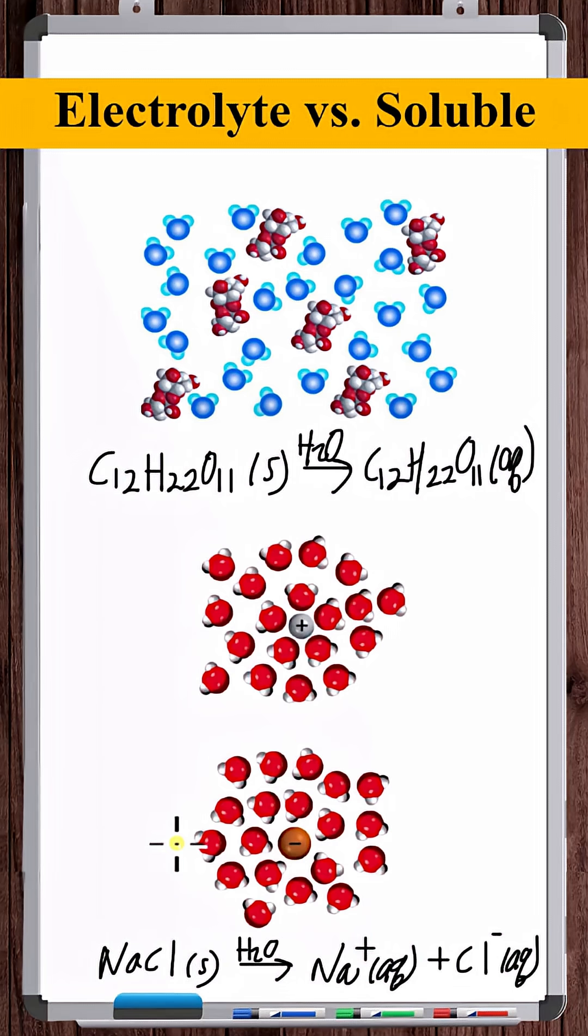In order to be an electrolyte, you need ions to dissolve in the solution. So you can see sodium chloride is an electrolyte, but sugar is not.